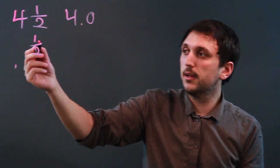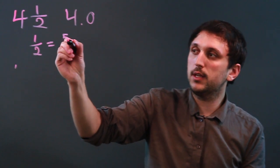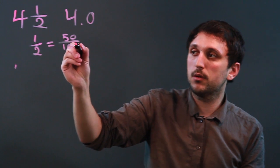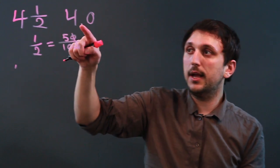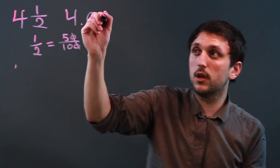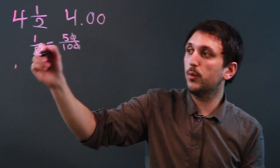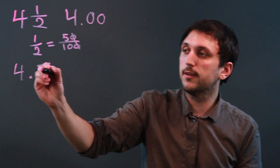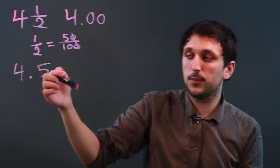So one-half is equal to 50 out of 100, or just 5 over 10. Each decimal place — this is the tenths, this would be the hundredths — so 5 out of 10, we just say 4.5, because it's 5 tenths.